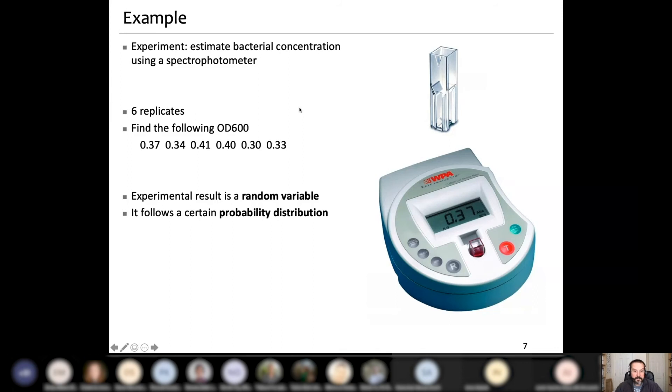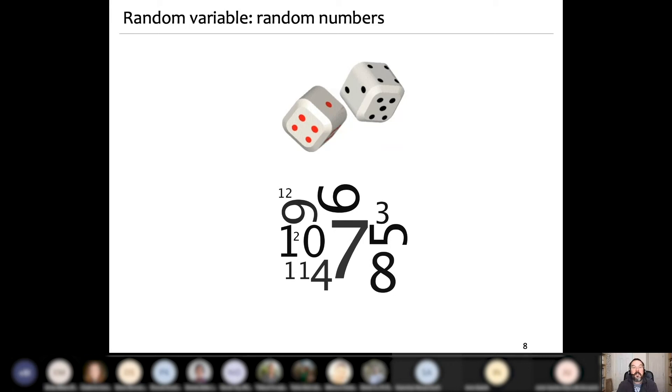You measure the same thing. You repeat the experiment under the same conditions several times. And every time you do this, you get a different result. This is natural. This is nothing to be worried about. This is everyday life, everyday practice in biology and all experimental sciences. Experimental result is a random variable and it follows a certain probability distribution.